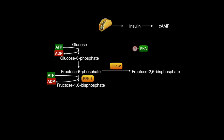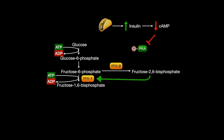After a meal, insulin levels are raised, which lowers cyclic AMP levels, lowering protein kinase A activity, making the dephosphorylated PFK-2 form, which creates fructose-2,6-bisphosphate from fructose-6-phosphate, that activates PFK-1, increasing glycolysis and simultaneously decreasing gluconeogenesis.